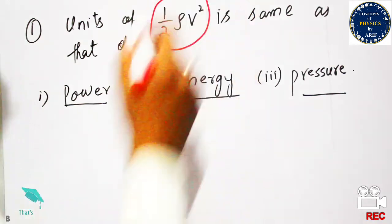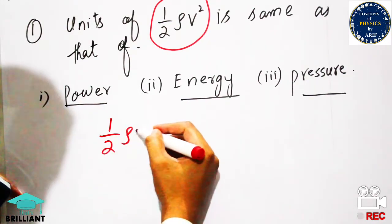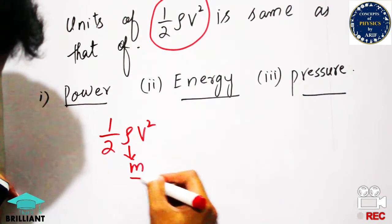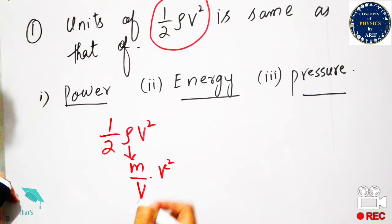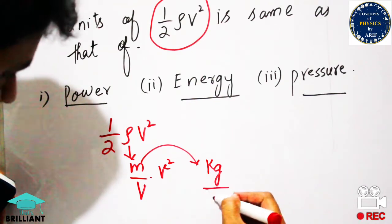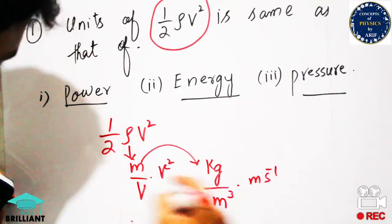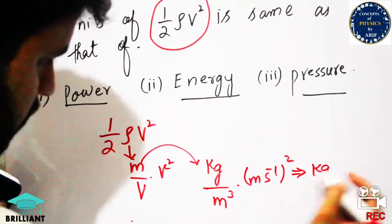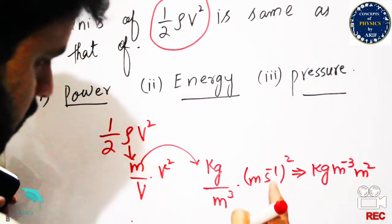The expression ½ρv² comes from Bernoulli's equation. Rho (ρ) is density, which has units of mass per unit volume, and v² is velocity squared. Mass has units of kilograms, volume has units of meter cubed, and velocity has units of meters per second — squared. Don't forget to put the whole square. So we get kilogram per meter cubed times meter squared per second squared.